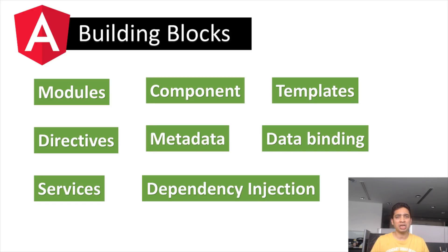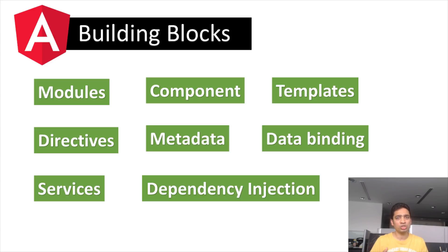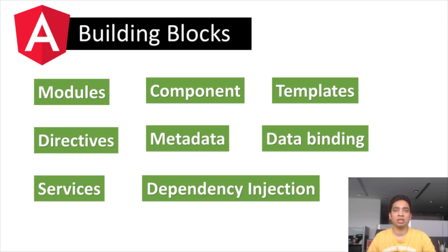The first building block is modules. Angular brings the concept of modularity, where you can build a single application by separating it into many modules. A module is a mechanism to group components, directives, and services that are related, so they can be combined with other modules to create an application. You can think of modules as boxes that organize application functionality into features and reusable chunks — similar to packages and namespaces in Java and C#.